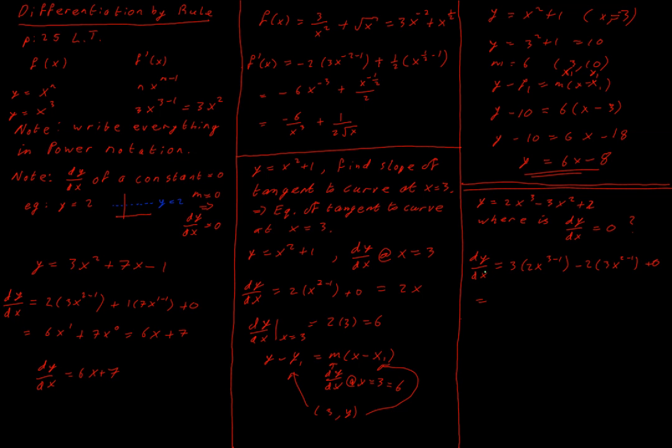Now this is dy/dx. So we have 6x² - 6x. And we want to know when that is equal to zero.